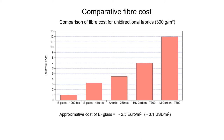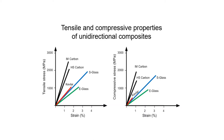Here, the comparative fiber cost has been shown. The comparison of fiber cost for unidirectional fiber bricks of 300 grams per meter square shows it is highest for IM carbon and lowest for E-glass. The tensile and compressive properties of unidirectional composites show that IM carbon, followed by HS carbon, Kevlar, S-glass and E-glass — with IM carbon being the most expensive — offers the greatest material properties.